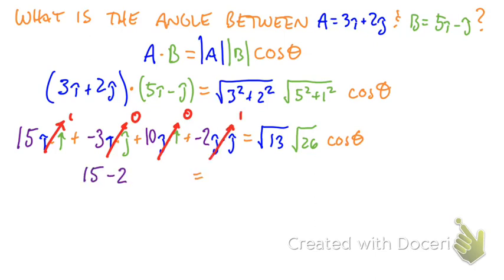So what we get then is the 15 from the i dot i stays with us and the minus 2 from the j dot j.